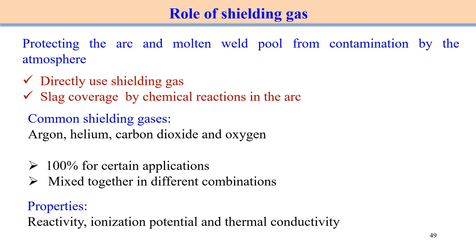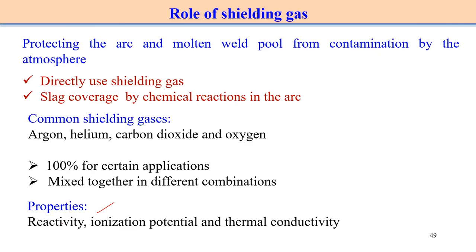Before choosing any kind of sealing gas for the welding process, we need to consider properties such as reactivity, ionisation potential, and thermal conductivity of the sealing gas. By looking into all these properties, we can choose one particular sealing gas associated with the welding process.